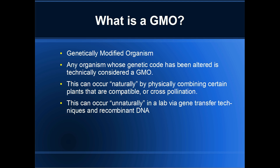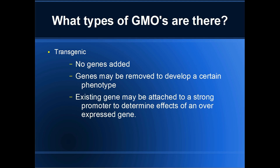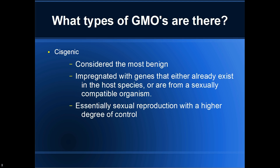Using gene transfer techniques and recombinant DNA. So what types of GMOs are there? There are three. The first type is transgenic, in which case there are no foreign genes added to the plant. You either remove a gene and see what type of phenotype it expresses, or you attach a gene to a strong promoter and see what happens when that gene becomes overexpressed. Essentially, you're not adding anything foreign — you're just manipulating the plant that's already there.